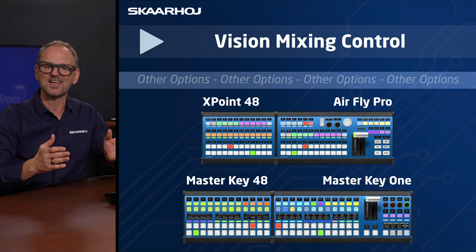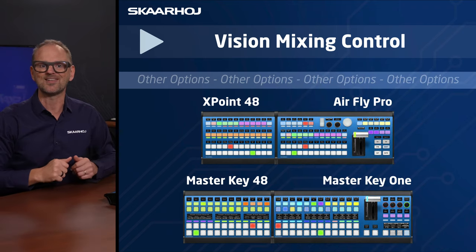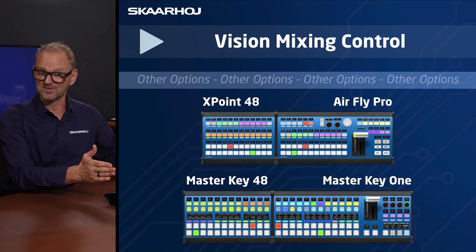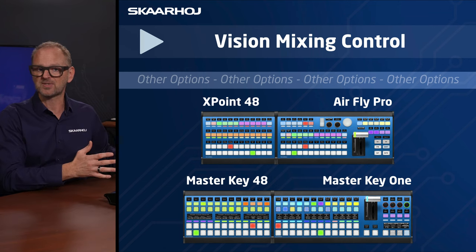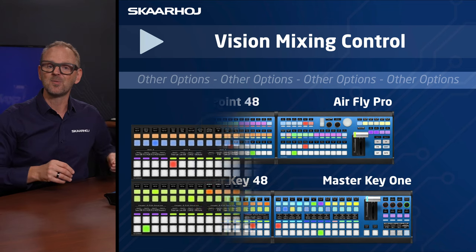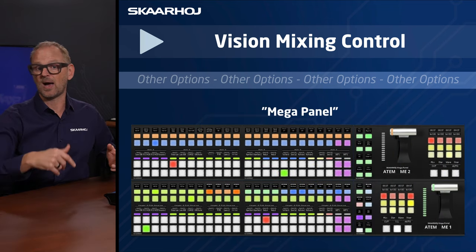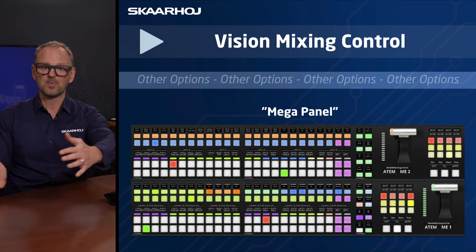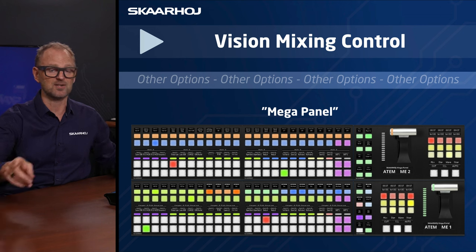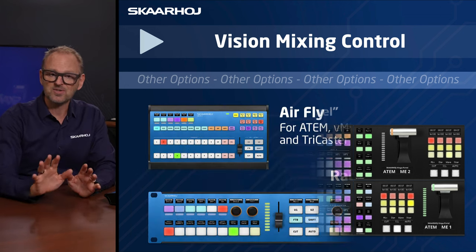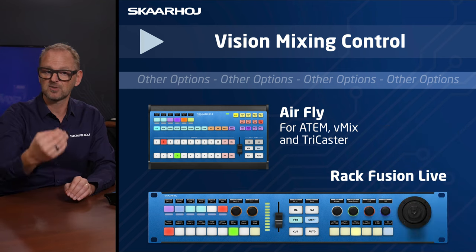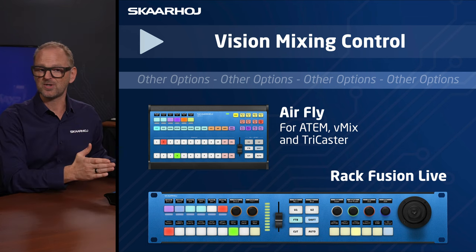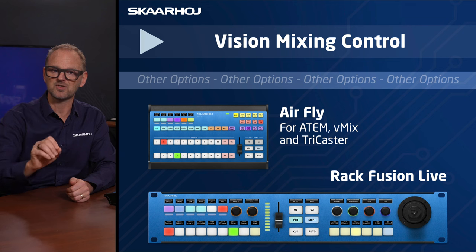Vision mixing controllers are prime examples of modularity in the Skahoy ecosystem. Crosspoint 48 is a perfect extension to AirFly Pro if you want more direct access to sources, purchasable later. Similarly, MasterKey 48 extends MasterKeyOne. We also have the Mega Panel — MasterKey 48 extensions added to MasterKeyOne or to T-Block Left and Right, which is a separate T-bar section designed for scalable multi-ME configurations to build a really huge panel. Additionally, RackFusion Live integrates a PTZ controller with a switching controller in a rack unit — very compact for flyaway kits.